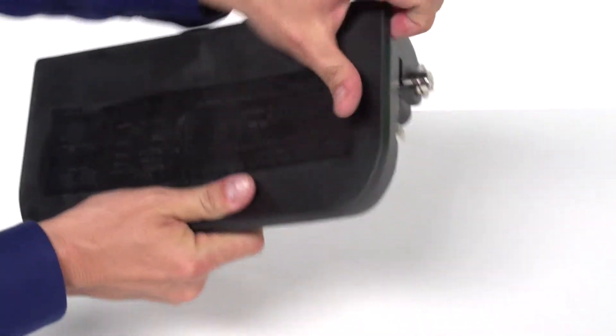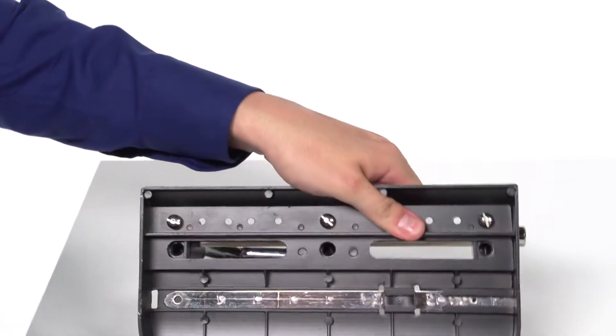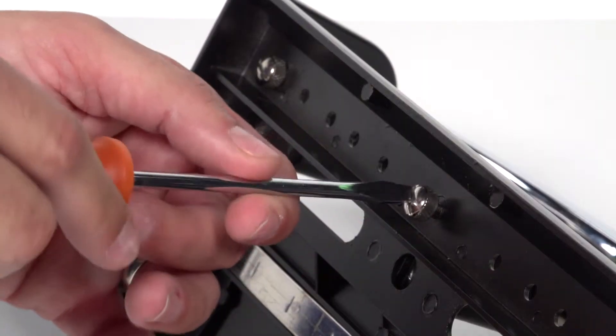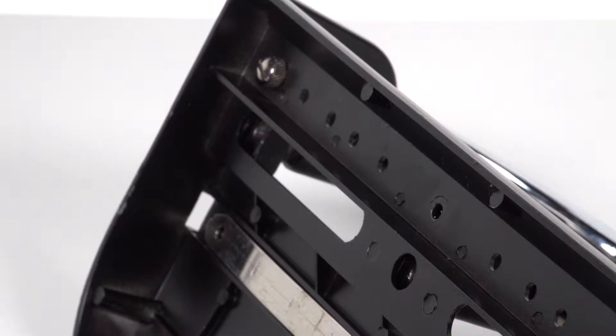First, remove the chip tray from the punch base. Then, remove the screws from the punch head from underneath the base.